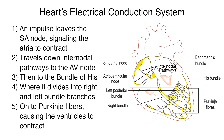The impulse then travels to the bundle of HIS, where it divides into right and left bundle branches, and on to the Purkinje fibers, causing the ventricles to contract.